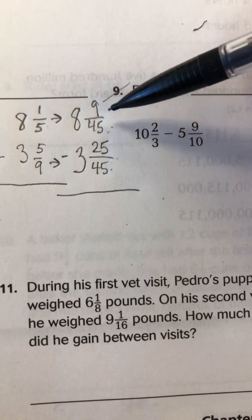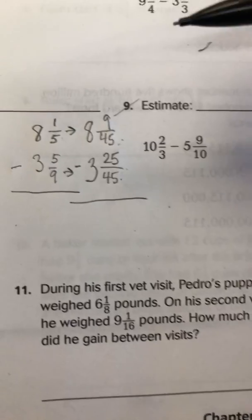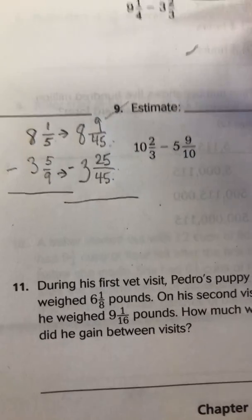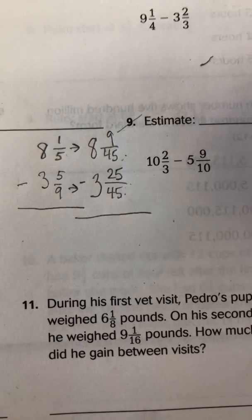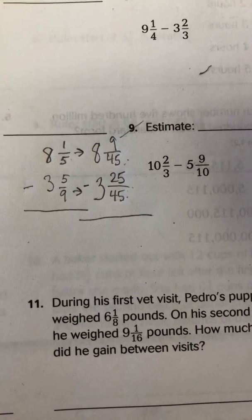So now we look at our numerators. When you are subtracting fractions, you only subtract the numerators. Your denominator stays the same. So I look at 9 minus 25. And if you know anything about traditional subtraction, that's not something you're going to be able to do without regrouping. So that's what we're going to do here.